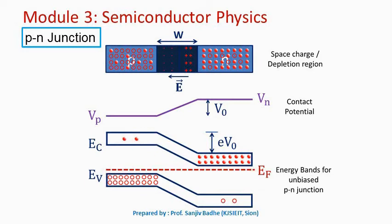In order to show the Fermi level as constant, the energy bands on the P side must be lifted up, and this lifting results in an energy hill at the junction. On the N side conduction band we have a large number of electrons — the majority carriers — and very few holes in the valence band — the minority carriers. On the P side valence band we have a large number of holes — the majority carriers — and very few electrons in the conduction band, which are the minority carriers.